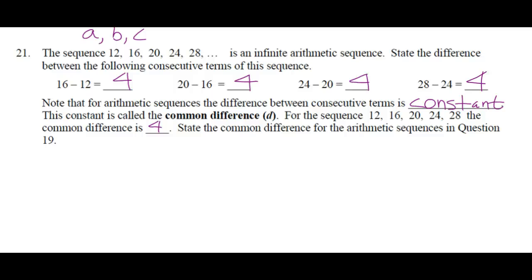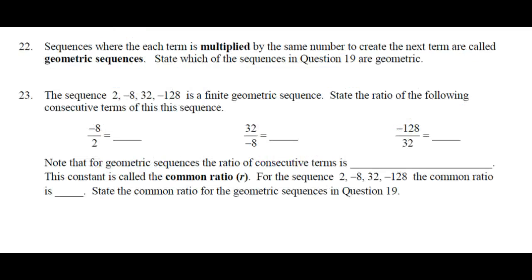This constant is called the common difference, D. For the sequence 12, 16, 20, 24, 28, the common difference is? Four. State the common difference for the arithmetic sequences in question 19. So for A, what's the constant difference? Five. For B, 2.5. And for C, negative 7.